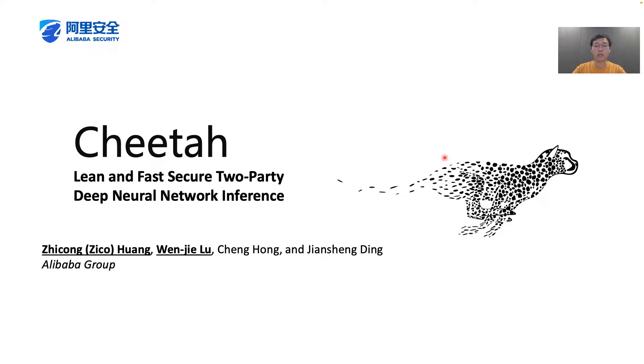Hello, my name is Zico from Alibaba Group. I'm going to present Chita, a secure two-party deep neural network inference framework.